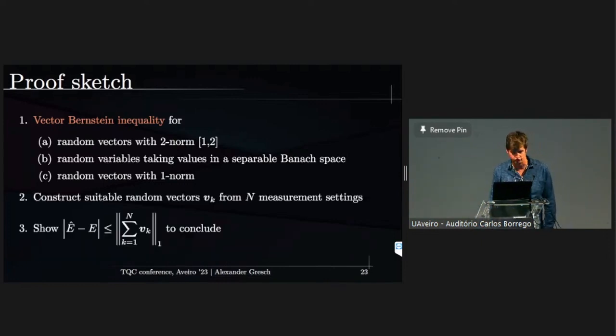Then as a special case, we can go back then to the one norm. Then we have to construct suitable random vectors from the measurement settings. And then the last step, we have to actually show that the one norm is actually an upper bound to the energy estimation accuracy that you want to achieve.